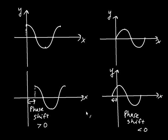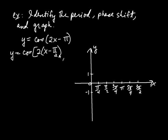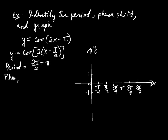Now let's do an example putting it all together. We're asked to identify the period, the phase shift, and then graph the function. Writing in standard form: Y equals cosine of 2 times X minus π/2. The period equals 2π divided by 2, which is π. The phase shift is the number being subtracted from X, so in this case it's positive π/2.